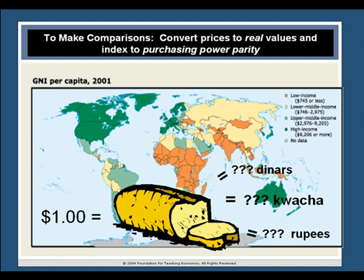One more caveat. It's important to note that comparisons of standard of living among nations are valid only if the measurement tool is standardized. First, nominal income values are converted to real values to eliminate the effects of inflation. Then, income is converted to U.S. dollars and indexed to purchasing power parity. The result is that if we know that a person living on $1 a day in the United States can afford to buy a half loaf of bread and nothing else, then the person represented in a developing nation as living on $1 a day would also be scraping by on half a loaf of bread.